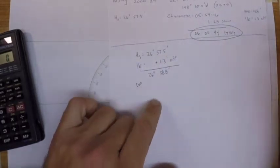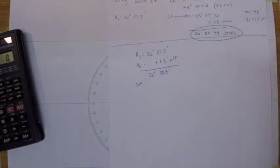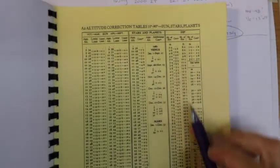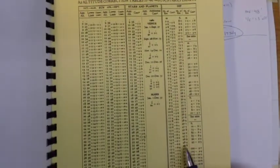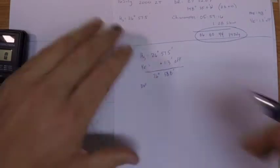Next was our dip or height of eye correction which was 48 feet. So in front of the nautical almanac I'll pull out a value for 48 feet which is negative 6.7.